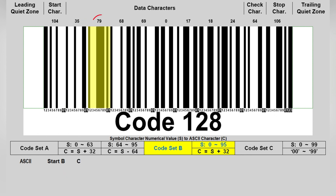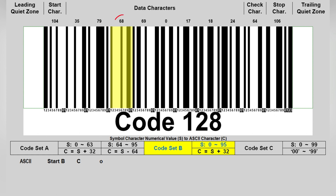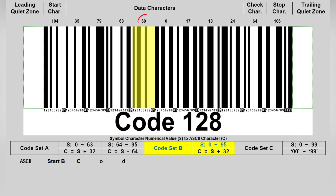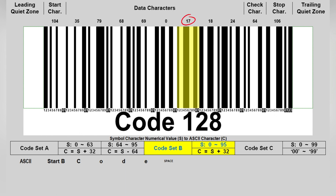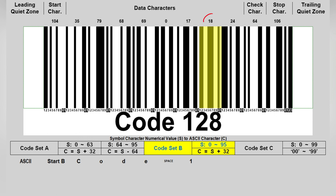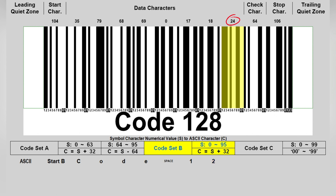The fourth data character is 69; 69 plus 32 equals 101, which is ASCII value E. The fifth data character is 0; 0 plus 32 equals 32, which is ASCII value space. The sixth data character is 17; 17 plus 32 equals 49, which is ASCII value 1. The seventh data character is 18; 18 plus 32 equals 50, which is ASCII value 2. The eighth data character is 24; 24 plus 32 equals 56, which is ASCII value 8.